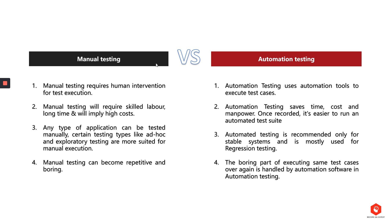Any type of application can be tested manually, but certain testing types like ad hoc and exploratory testing are more suited for manual execution. On the other side, automated testing is recommended only for stable systems and is mostly used for regression testing, which will be covered in future videos. Manual testing can become repetitive and boring, and the boring part of executing the same test cases over and over again is handled by the automation software.